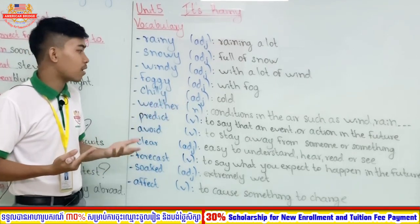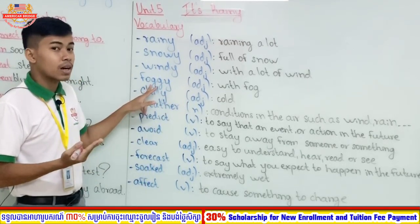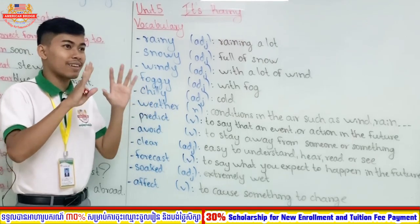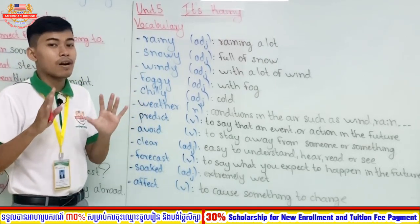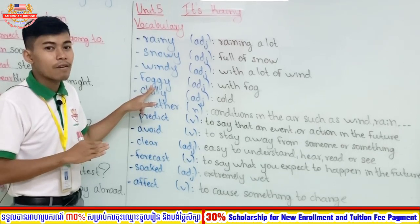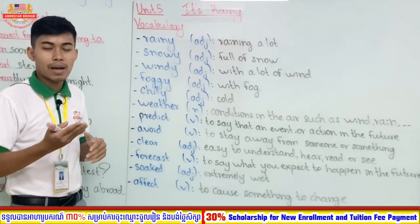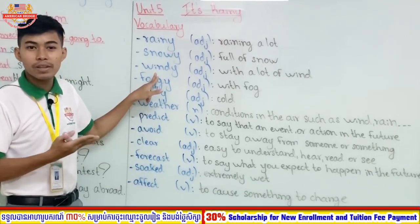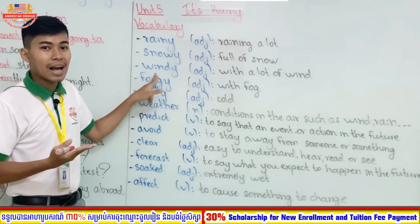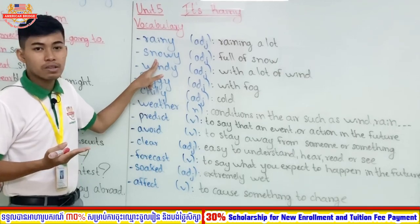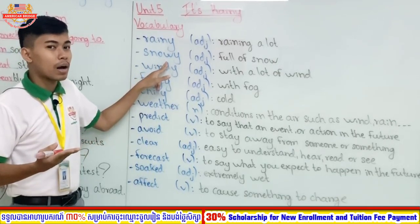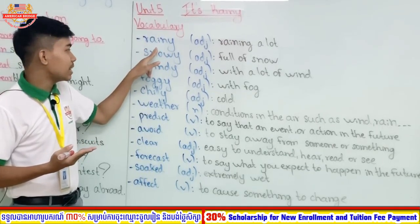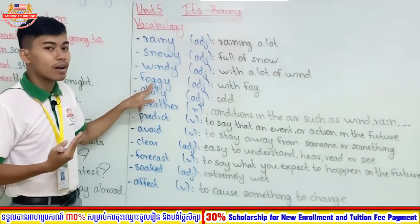The next word is 'foggy.' Foggy is an adjective meaning with a lot of fog. Foggy weather usually happens in the morning — when you go somewhere in the morning and you cannot see anything clearly because there is a lot of fog, it is foggy. Spelling: F-O-G-G-Y. Windy is W-I-N-D-Y, snowy is S-N-O-W-Y, rainy is R-A-I-N-Y.